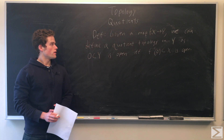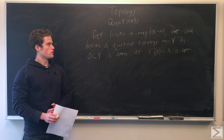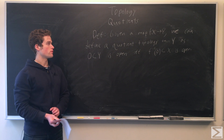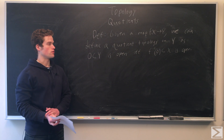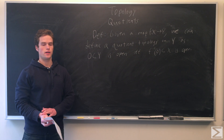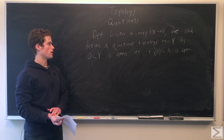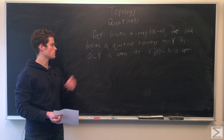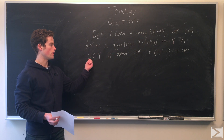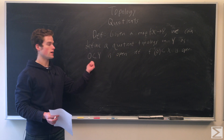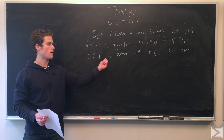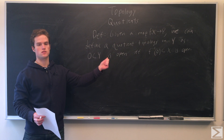So if we're given a map going from a topological space X to a topological space Y, we can define a quotient topology in Y as: a set in Y is open if and only if the inverse — f-inverse of that set in X — is open.